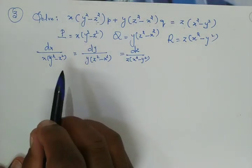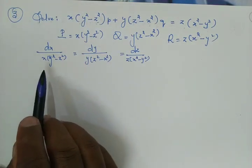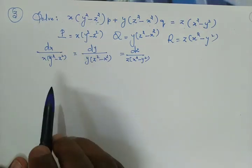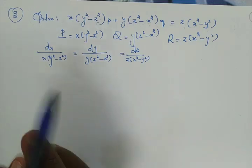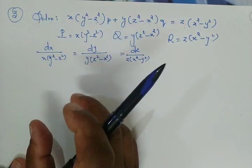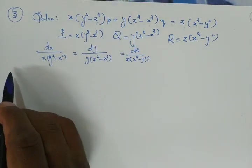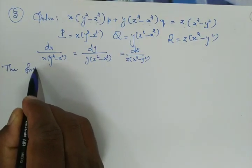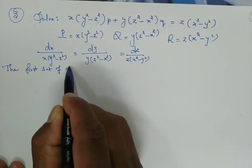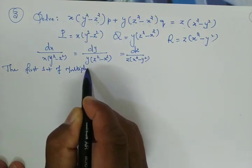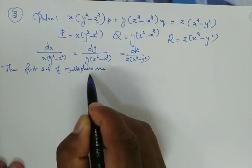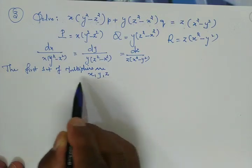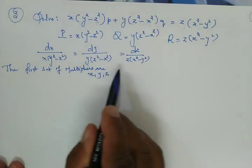As discussed in the last video, we select a set of Lagrange multipliers. The multipliers should make the denominator zero — they may be constants or variables. The first set of multipliers we consider are x, y, z.